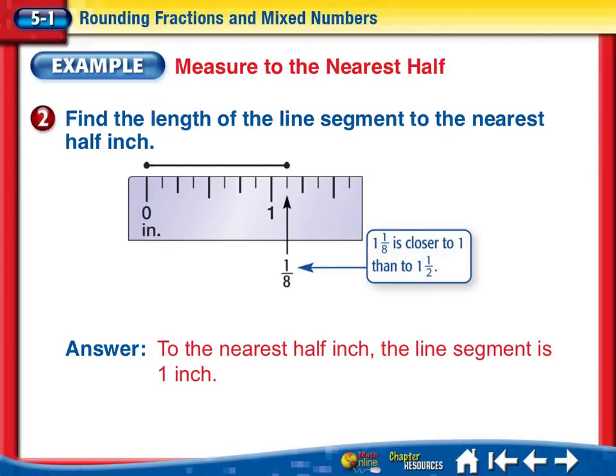Okay, let's look at the example of measuring to the nearest half. Find the length of the line segment to the nearest half inch. If you look at the line segment, it goes from here to here. It's a little bit past 1. The actual measurement is 1 eighth, so this is 1 and 1 eighth. 1 eighth is closer to 1 than it would be to 1 and a half, which would be right here. So to the nearest half inch, the line segment is 1 inch.